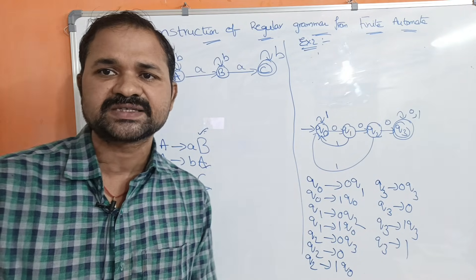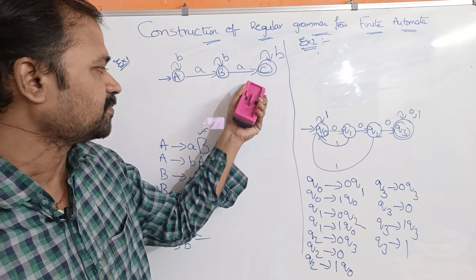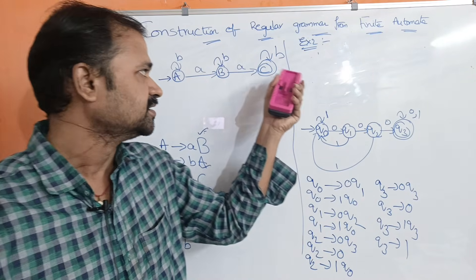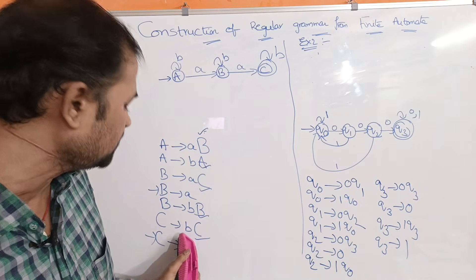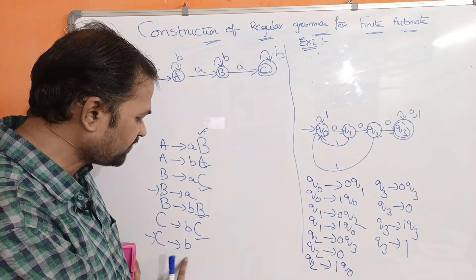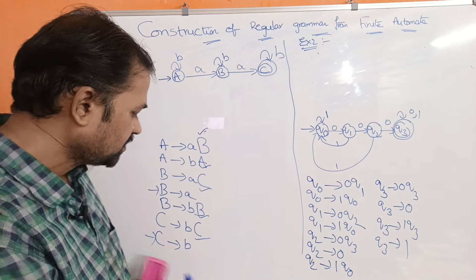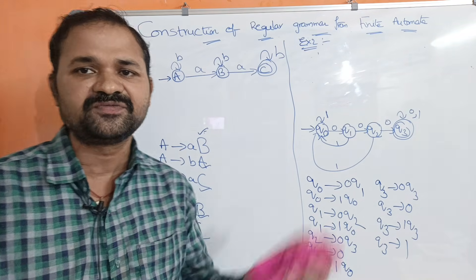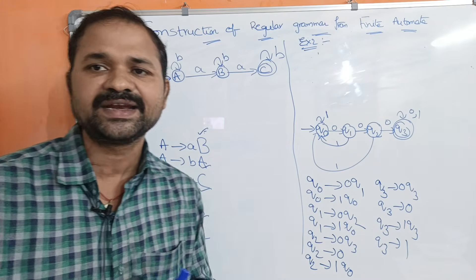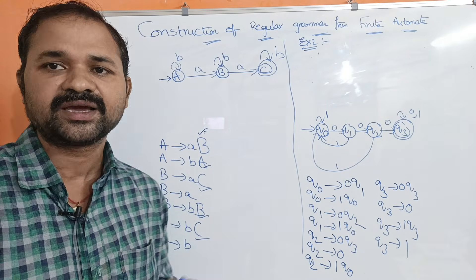The additional point to focus on: in the first example, C is the final state. C on b goes to C, so we write C implies bC and also C implies b — meaning even if there is no following state, we can reach the final state by applying b.